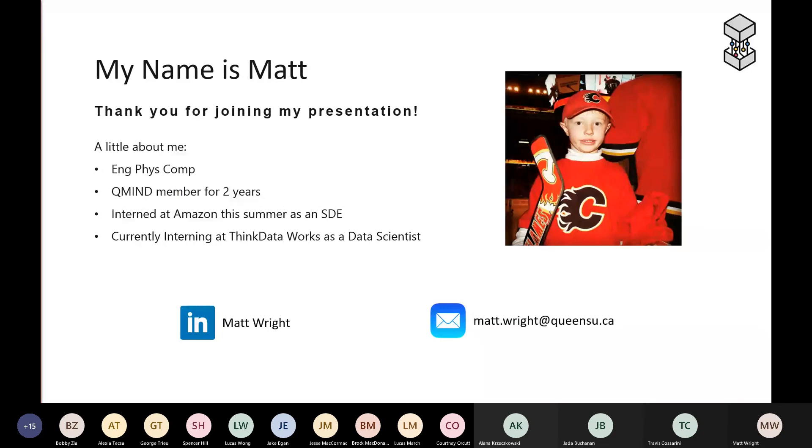A little bit about me: I'm technically in my fourth year of Eng-Phys Comp, super cool discipline with surprising crossover between computational physics and data science. I've been a Q-Mind member for the past two years and right now I'm on an internship. Instead of doing it through QUIP, I'm deferring my year and splitting it up between three different companies. Right now I'm at a tech startup called ThinkDataWorks in Toronto working as a data scientist for the next eight months, and this summer I worked at Amazon as a software development engineer.